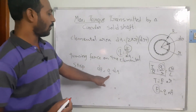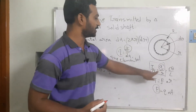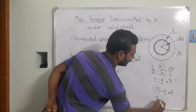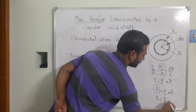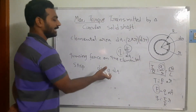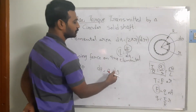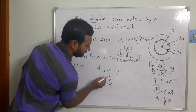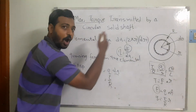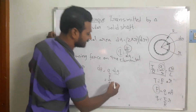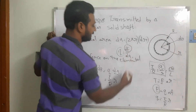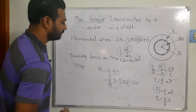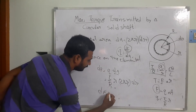We substitute from the governing equation: q equals τ/R times r, where τ is the maximum shear stress at the outer surface and R is the maximum radius. Substituting q and dA = 2πr·dr into the expression, we get df equals (τ/R) times 2πr²·dr.